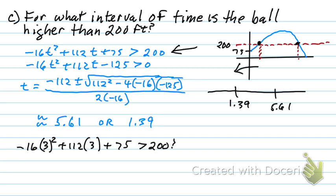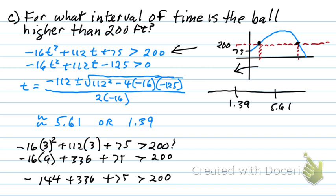So negative 16 times 9 plus that's going to be 336 plus 75, is that greater than 200? So this is going to be negative 144 plus 336 plus 75 greater than 200? So we've got 336 plus 75 equals 411. 411 minus 144 is that greater than 200? Yeah it is. So we know that this interval right here works.